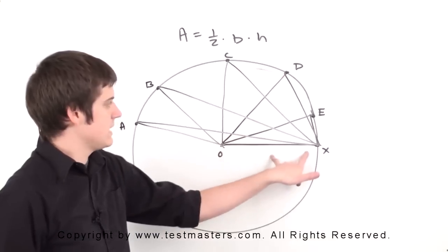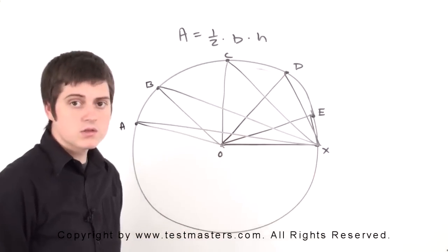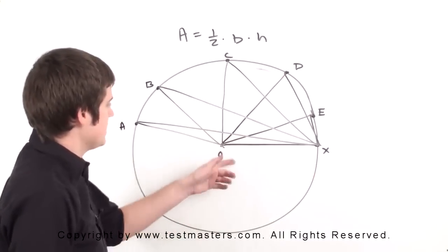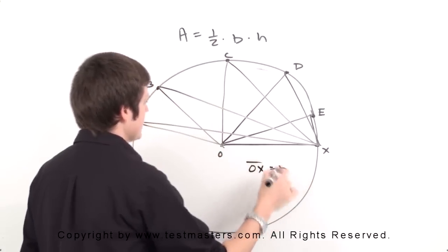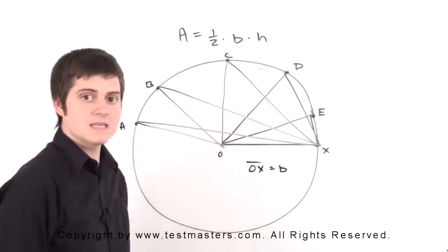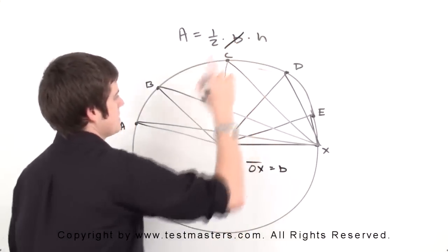Since OX is the radius of the circle, all the triangles have that segment in common. That common segment is going to be the base. So OX is equal to the base, which means since all of them are the same, we don't care about that when it comes to the formula.